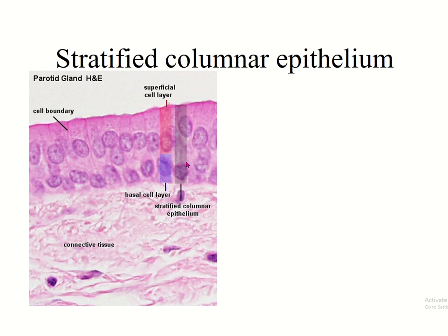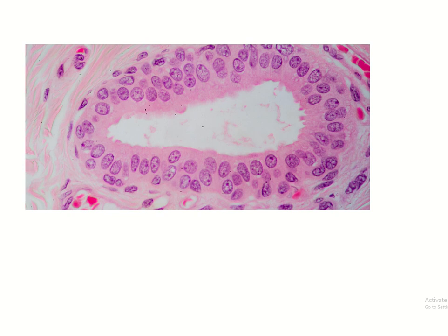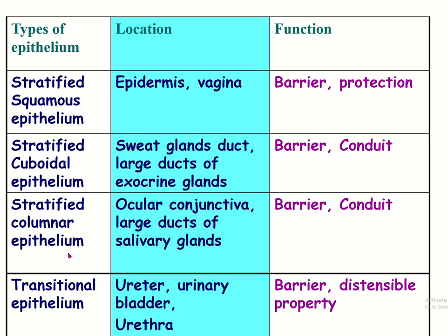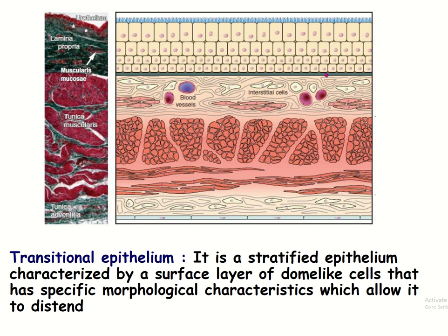Stratified columnar epithelium has two to three layers; the basal cells are usually cuboidal but the surface cells are columnar, hence named stratified columnar epithelium. Transitional epithelium is a special type found in the urinary bladder and urethra. Its surface cells are dome-shaped; basal cells gradually increase in size toward the dome-shaped surface cells.